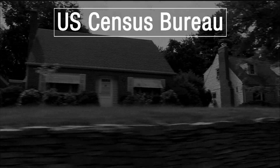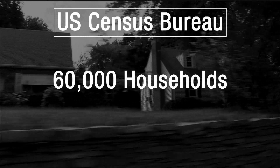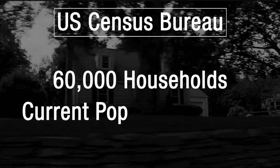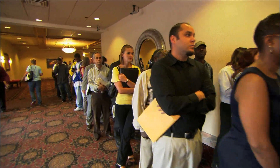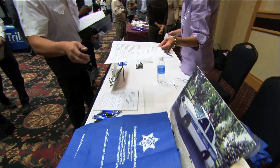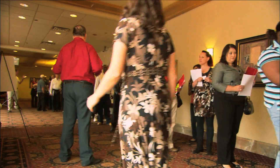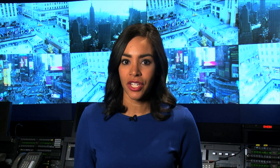The U.S. Census Bureau surveys 60,000 households every month about employment using the Current Population Survey, or CPS. After analyzing the data, the Bureau of Labor and Statistics calculates and releases the unemployment rate. During the recession of 2007 to 2009, unemployment peaked at 10 percent, not nearly as bad as it was during the Great Depression. But economists continued to monitor unemployment closely in order to keep their finger on the pulse of the American economy.